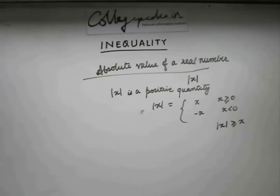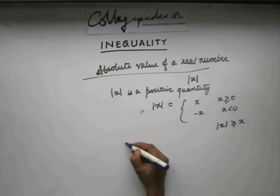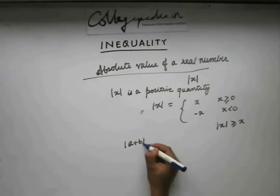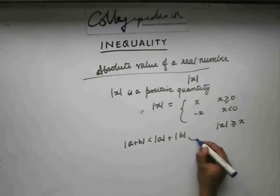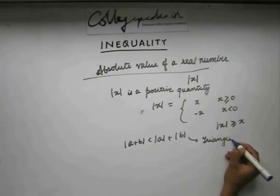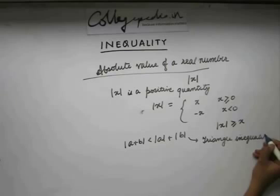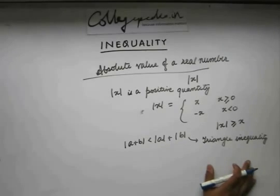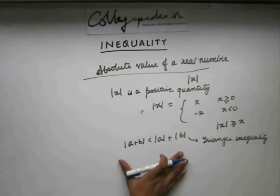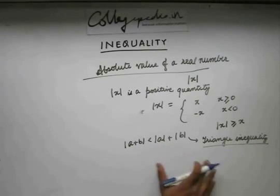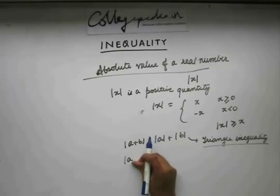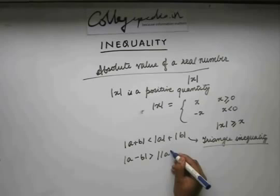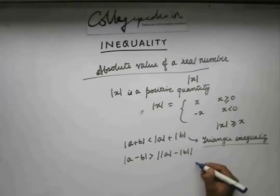The other inequalities related to modulus of a number include the triangle inequality: |a + b| ≤ |a| + |b|. We'll see the proof of this inequality when we study vectors, as it is mentioned in the starting topics of vectors. Another related inequality is |a − b| ≥ ||a| − |b||, which is also known as the triangle inequality.